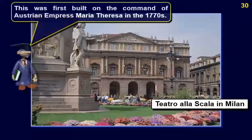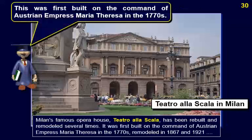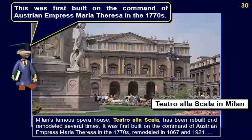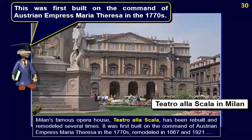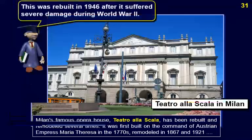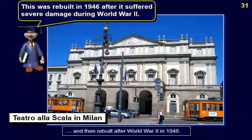Milan's famous opera house, Teatro alla Scala, has been rebuilt and remodeled several times. It was first built on the command of Austrian Empress Maria Theresa in the 1770s, remodeled in 1867 and 1921, and then rebuilt after World War II in 1946.